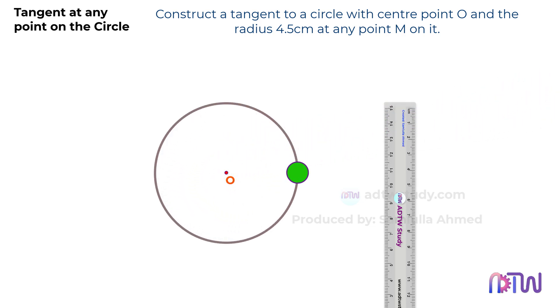We'll designate point M as the spot where the tangent touches the circle. As per the instructions, we're free to choose this point anywhere along the circumference of the circle.